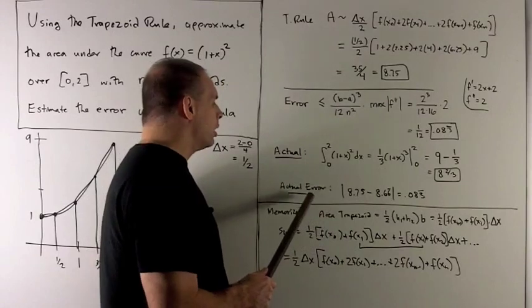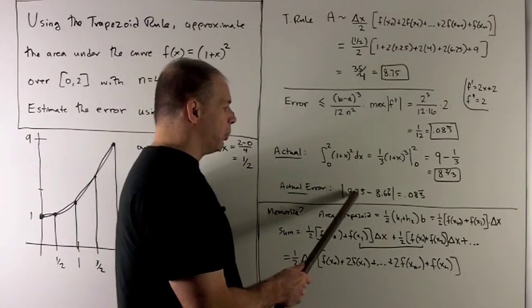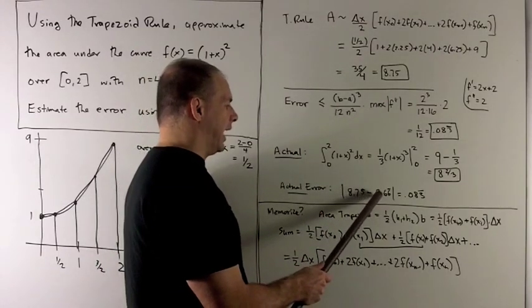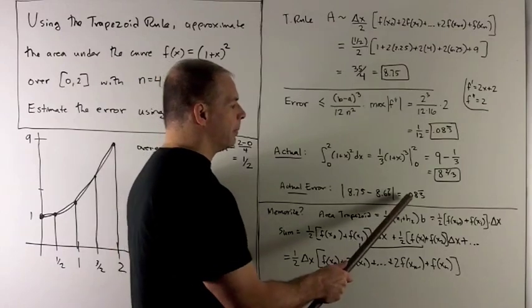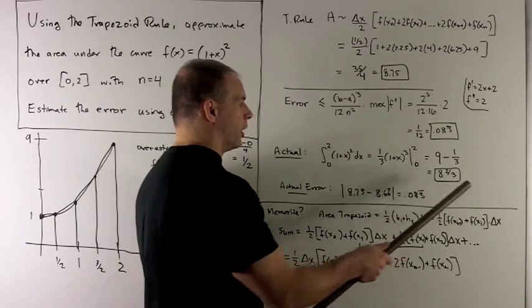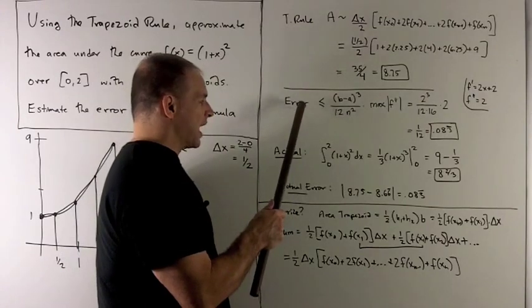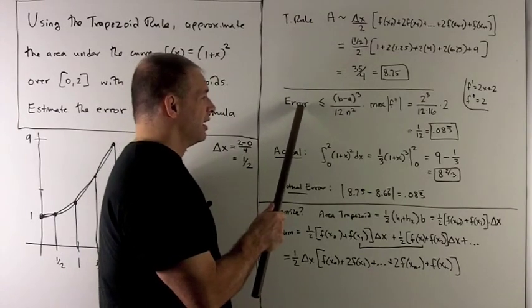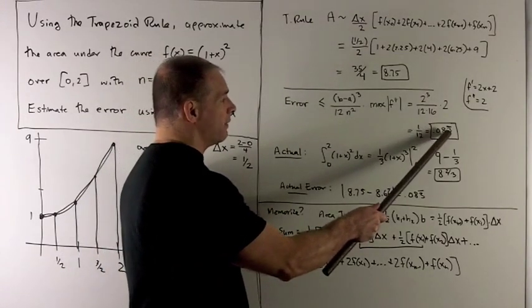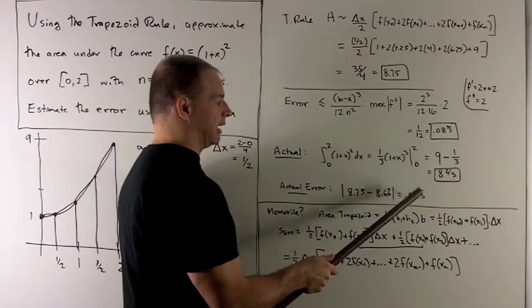The actual error, we're going to wind up with 8.75 - 8 and 2/3, gives me 0.083 going on forever. And so you know that the error rule is actually going to be sharp in this case. This is the largest error that we could have, and we actually wind up attaining it.